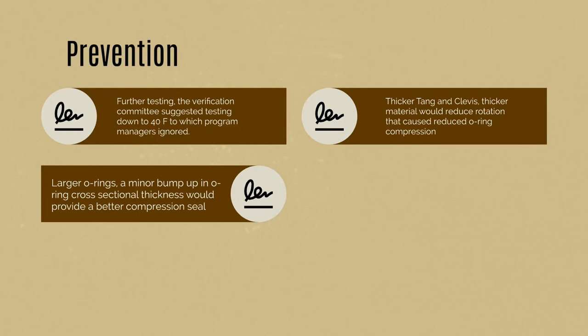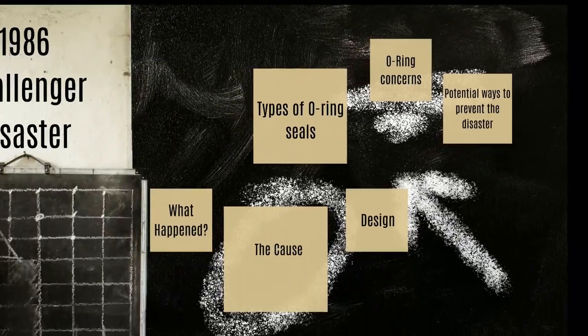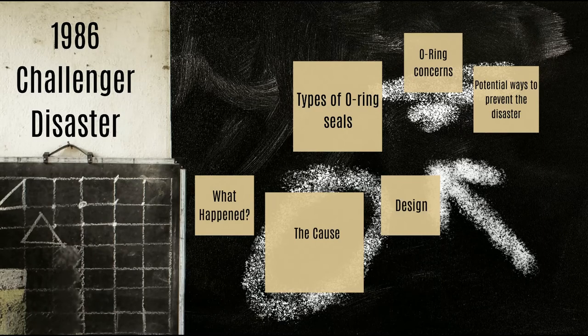There could also have been an issue between using metric and standard measurements — some items machined in metric when meant to be standard, or vice versa. But the key point is that O-rings require compression to work properly. That is an overview of the 1986 Challenger disaster — something that could have been easily prevented and that honestly failed because of two 10-cent parts.